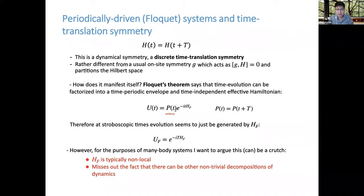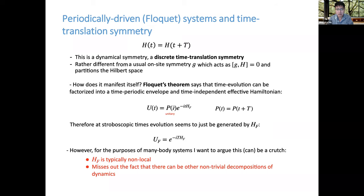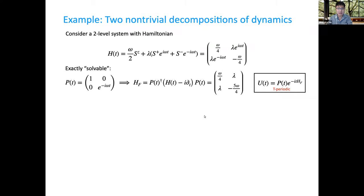Furthermore, this decomposition misses the fact that there can be other non-trivial decompositions of the dynamics — what I'll call micro-motion — in which the micro-motion might not be time-periodic. This is crucially tied to the first point: while there's always a change of frame in which dynamics appears local and time-independent, that Hamiltonian is non-local. The question arises: perhaps there's a different way of viewing the system in which there is a local Hamiltonian evolution, but the micro-motion might not be time-periodic with period T. Let me illustrate with a very simple two-level system.